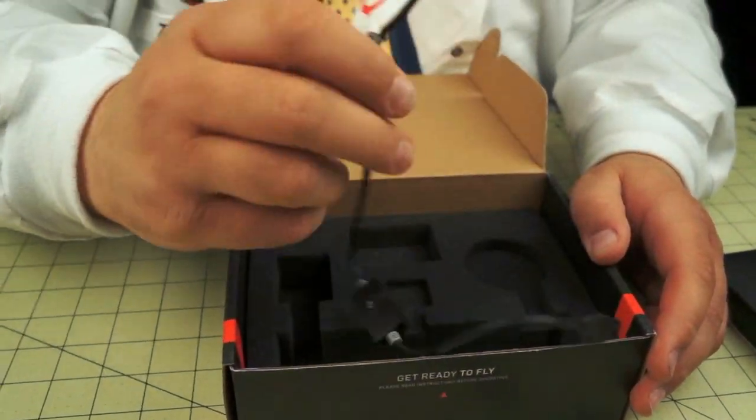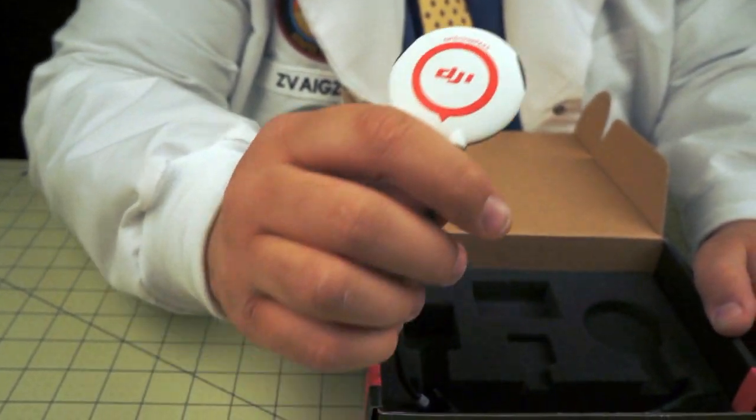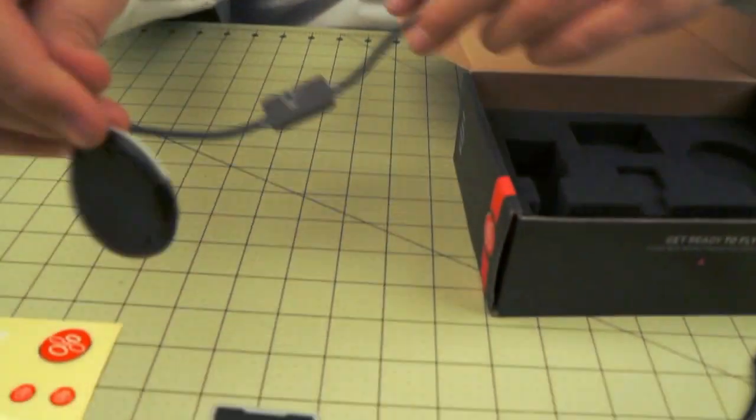And here we have the highlight, the GPS compass module. This is what allows it to return to home, hold position. This is why you buy this, or one of the reasons you buy this.